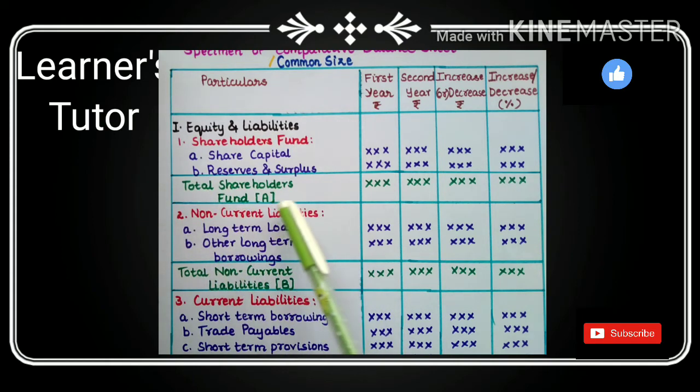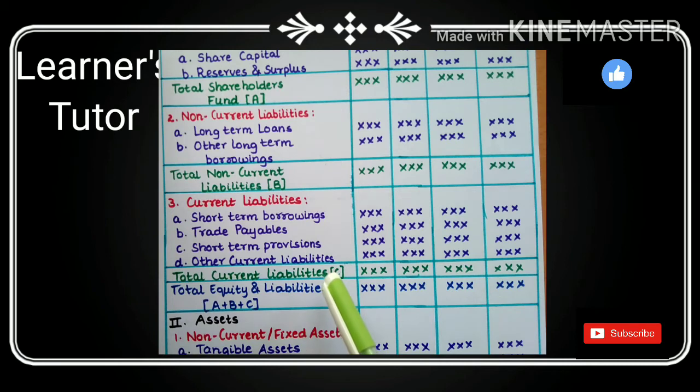Next, non-current liabilities: we have long-term loans and other long-term borrowings. If you add this both will get total non-current liabilities B. Under current liabilities we have short-term borrowings, trade payables (that is nothing but bills payable), short-term provision and other current liabilities. Current liabilities like creditors, bills payable, all those things come under that.